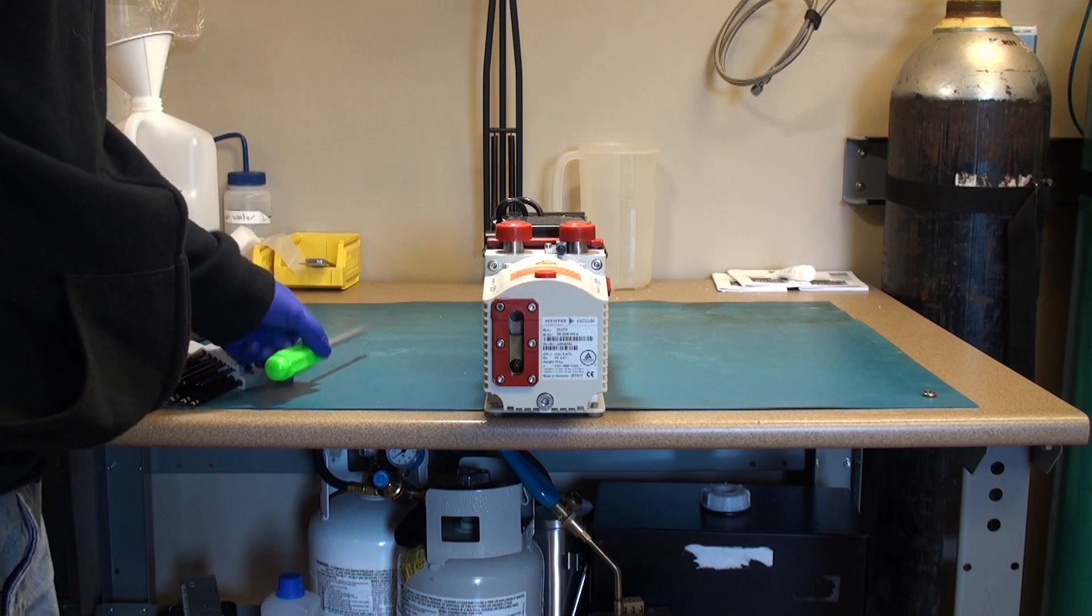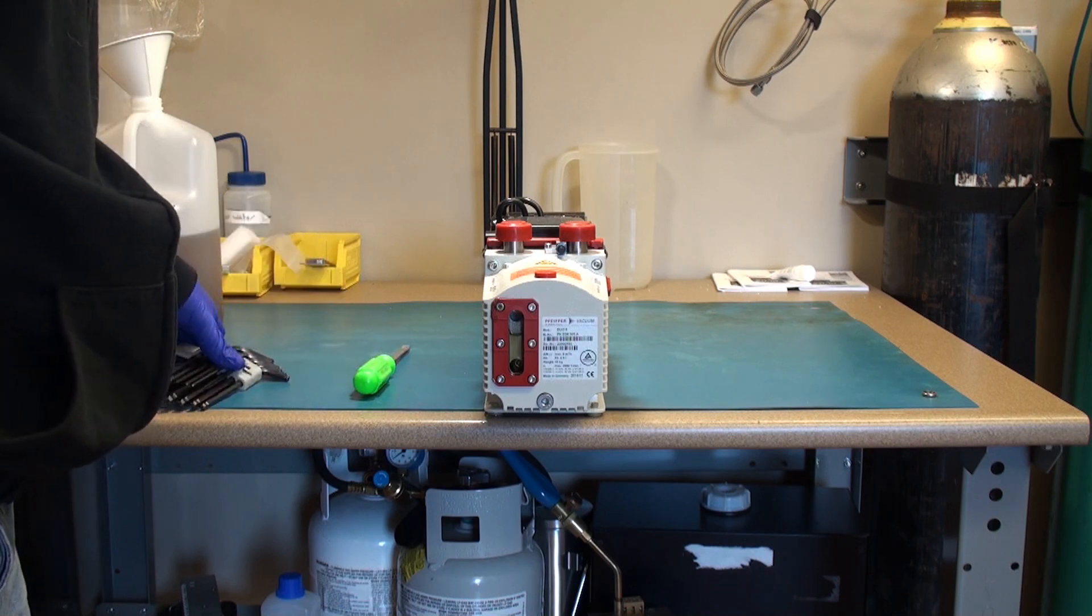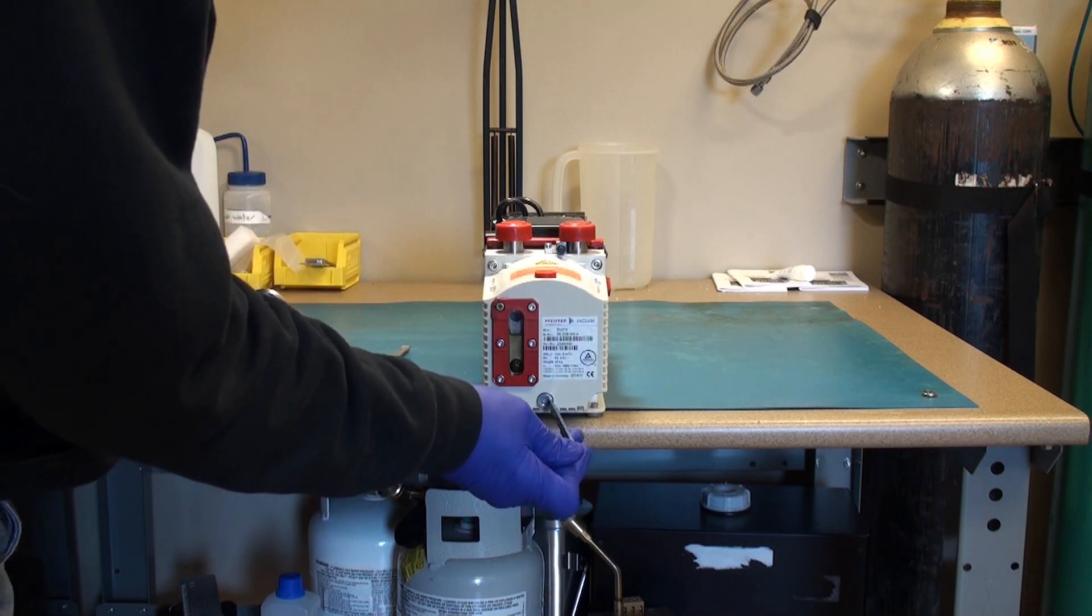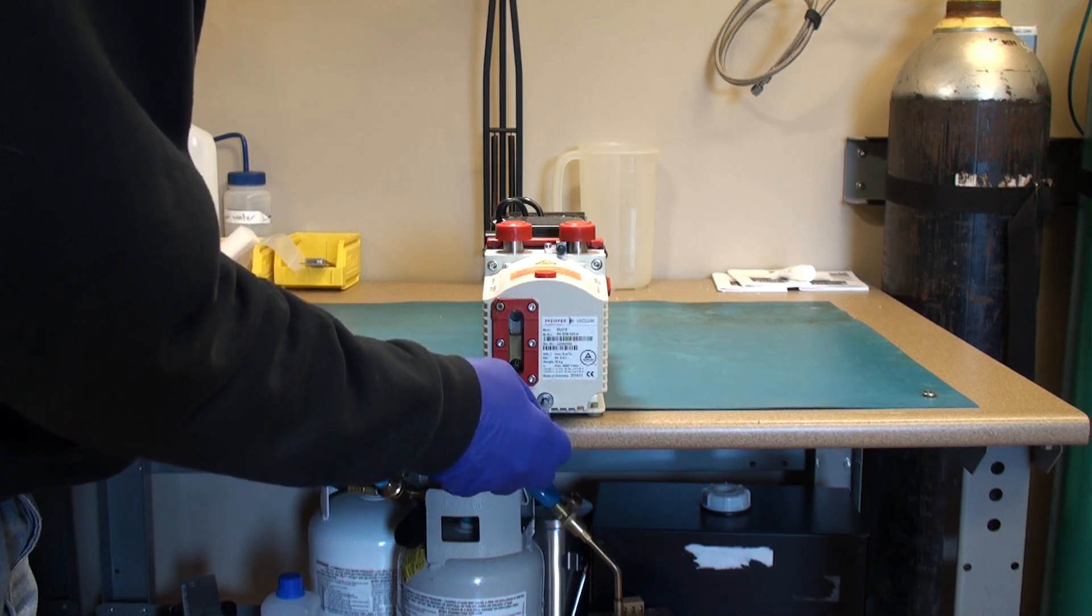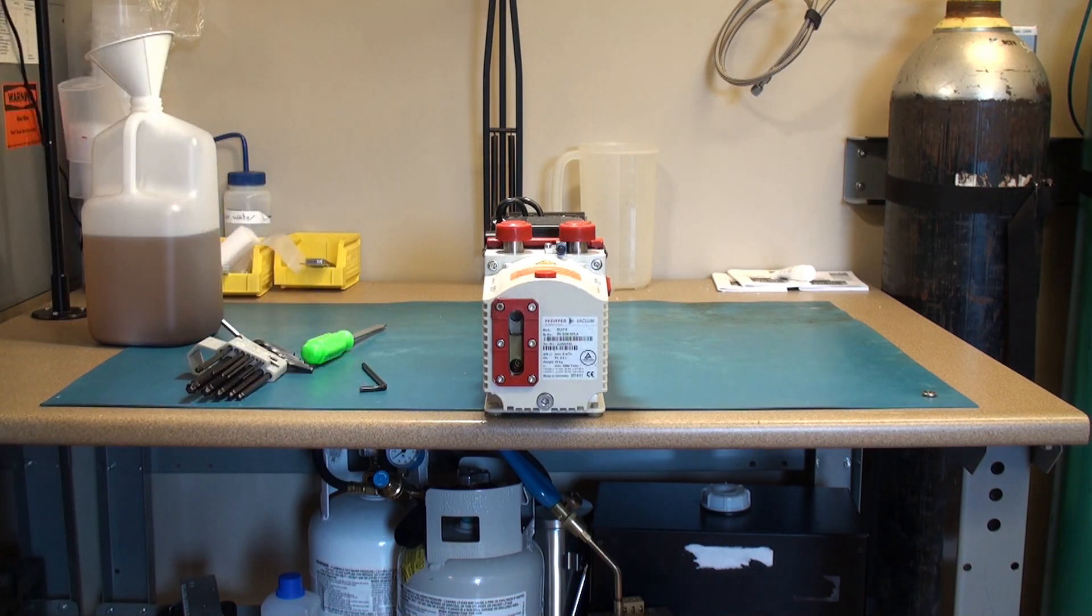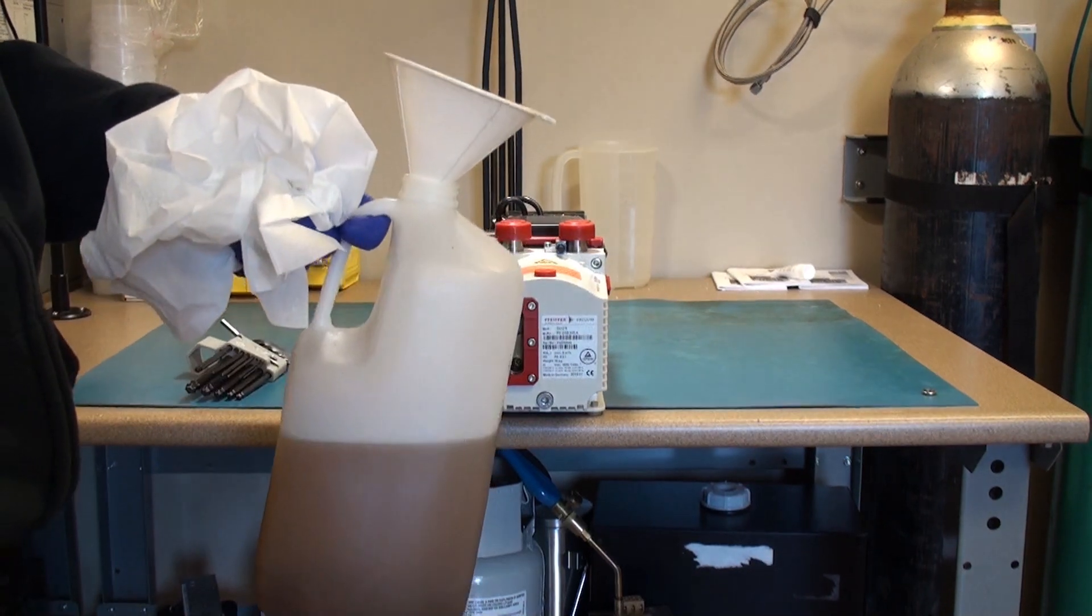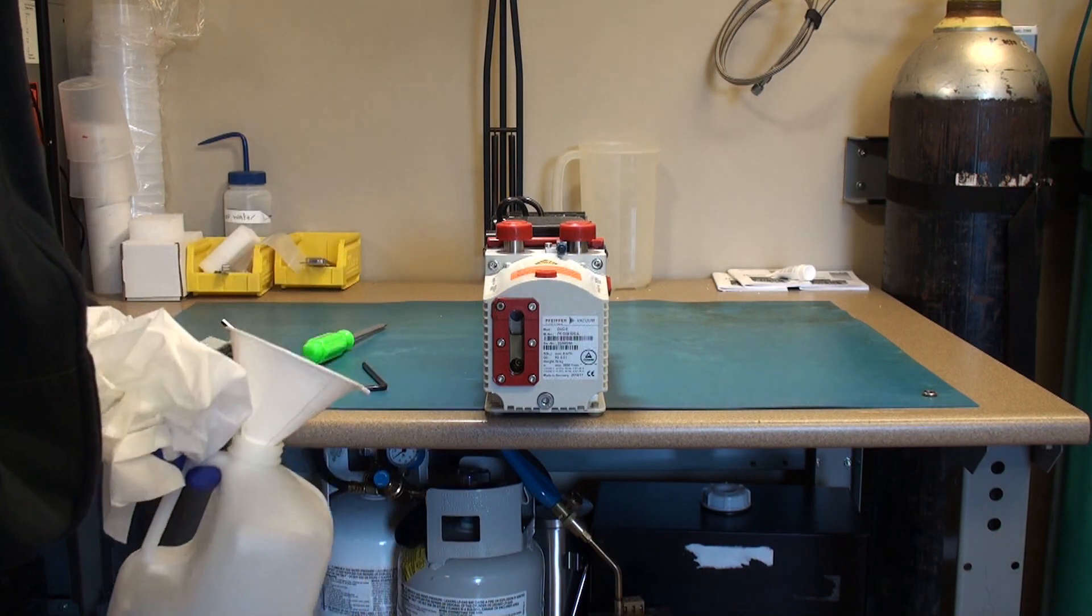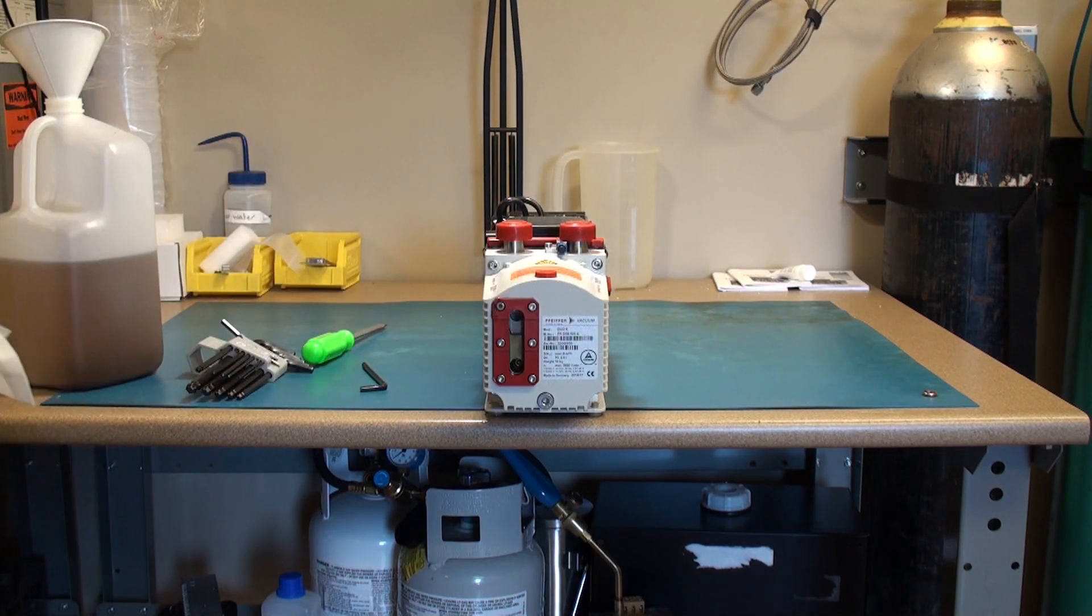Items that you need for this pump is a large screwdriver, a set of metric allen keys. In particular you need a five millimeter allen key to open the drain plug. You would need a waste oil container like the one I'm holding here with a funnel to catch the waste oil, and some Kim wipes just in case you make a mess.